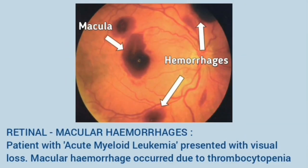These are retinal and macular hemorrhages in a patient with acute myeloid leukemia who presented with visual loss. These hemorrhages were due to thrombocytopenia.